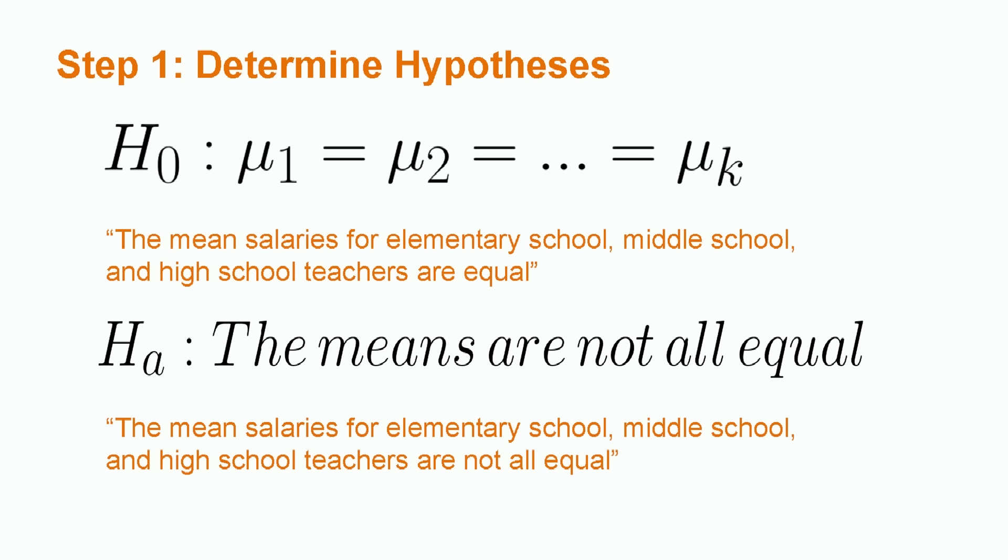we would say the mean salaries for elementary school, middle school, and high school teachers are equal. The alternative hypothesis is only in the form of words and is some variation of not all population means are equal.